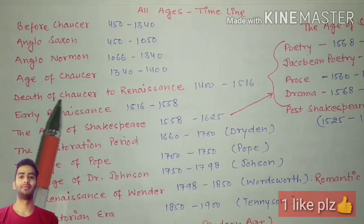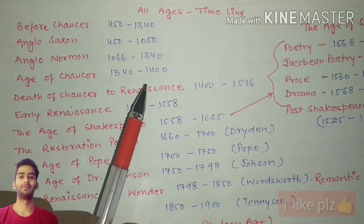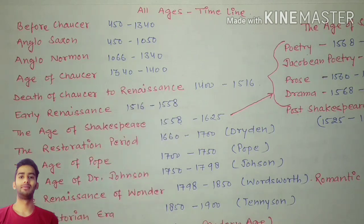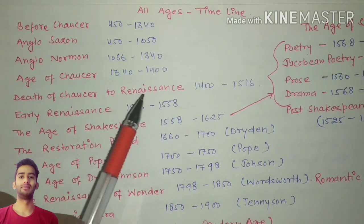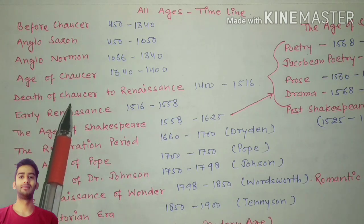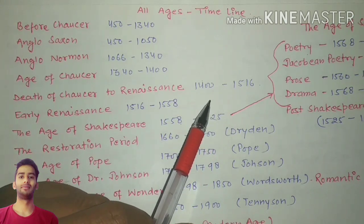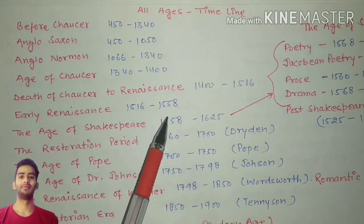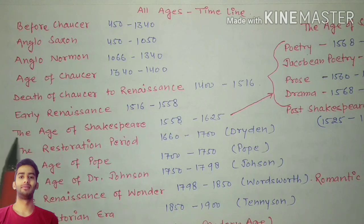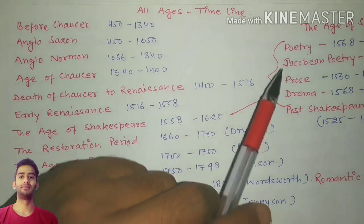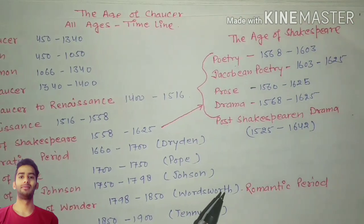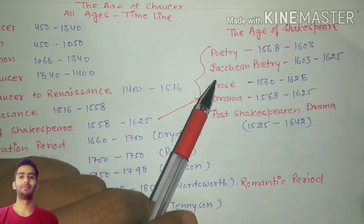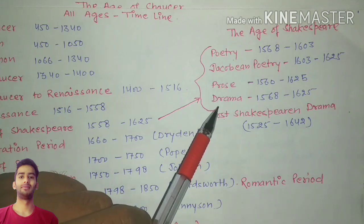The Age of Chaucer starts from 1340 to 1400 — 1340 being Chaucer's birth year and 1400 being the year of his death. Then comes the Renaissance: 1400 to 1516 is the early Renaissance, 1516 to 1558 is the next phase, and the Age of Shakespeare follows. The Age of Shakespeare is divided into categories: first is poetry, second is Jacobean poetry, third is prose, and drama.